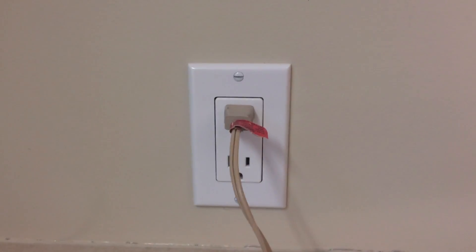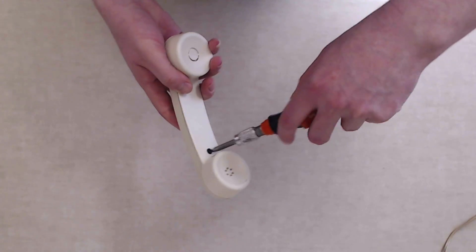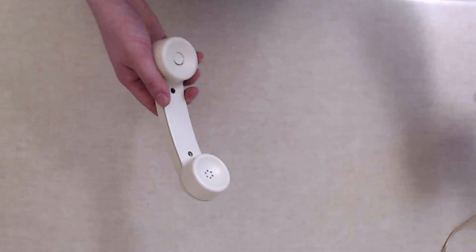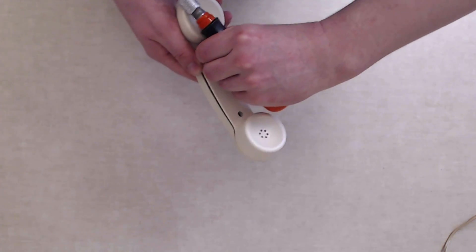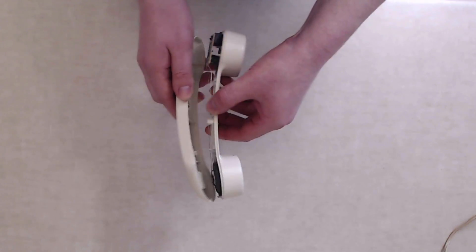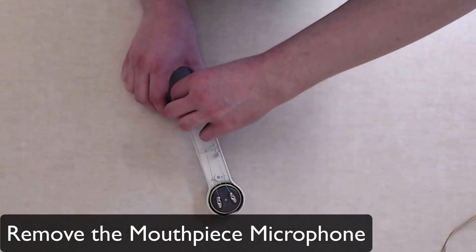Begin by plugging in your soldering iron and then opening the body of the phone handset. Depending on the phone's design, this can be a real pain or very simple. Luckily, this model has two screws for easy access. Next, you'll see the electronics of the phone and the two wires connecting the earpiece speaker and the microphone. Remove the microphone.